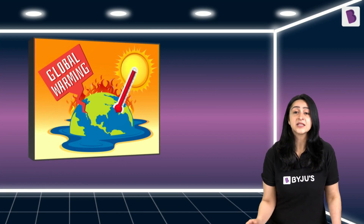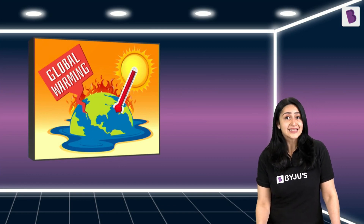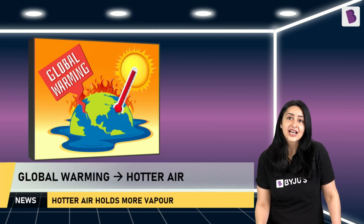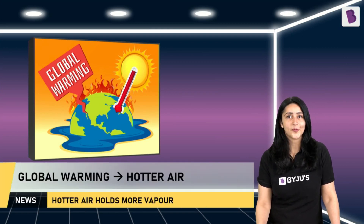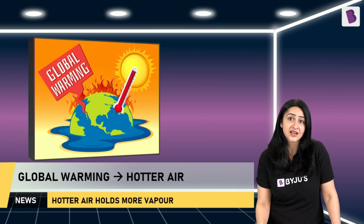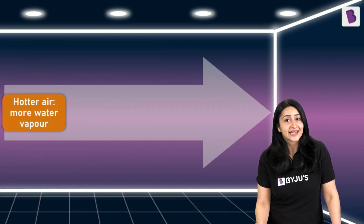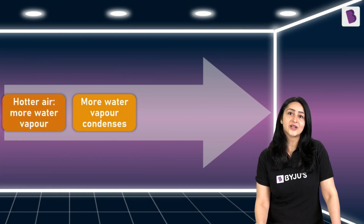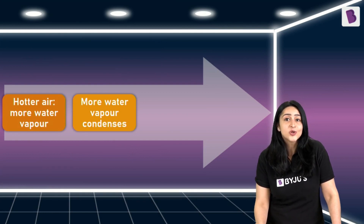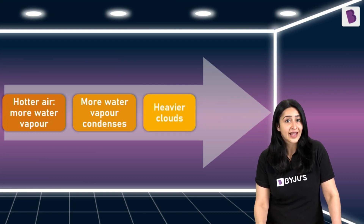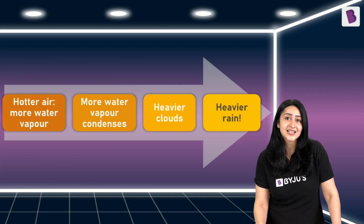In recent times, global warming has led to an increase in the Earth's global temperature, making the air hotter than before. This hotter air can hold more water vapor than it did a few decades ago. When this hot air rises and gets cold, the greater amount of water vapor it is holding condenses back into liquid water, giving us larger, heavier clouds and heavier rains than before.